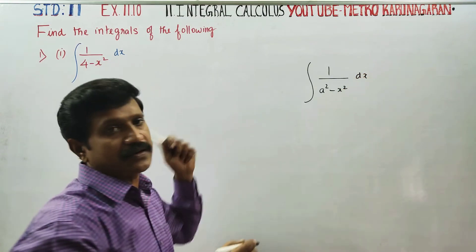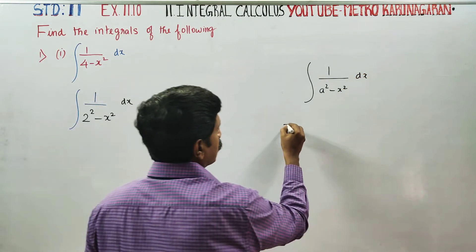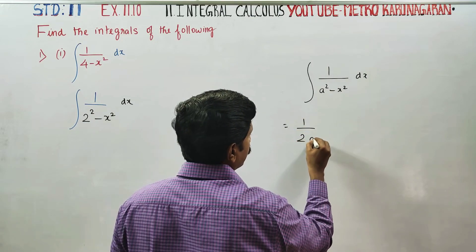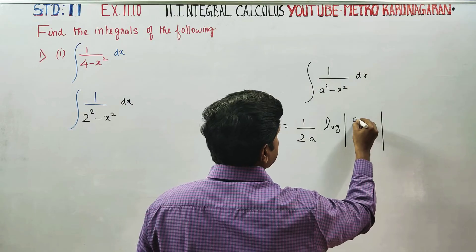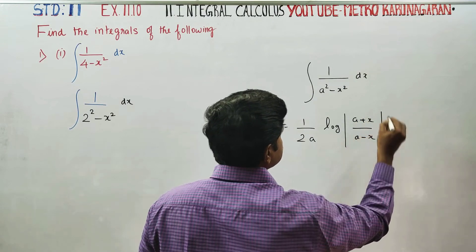The formula is 1 by 2a logarithm of a plus x by a minus x plus c.